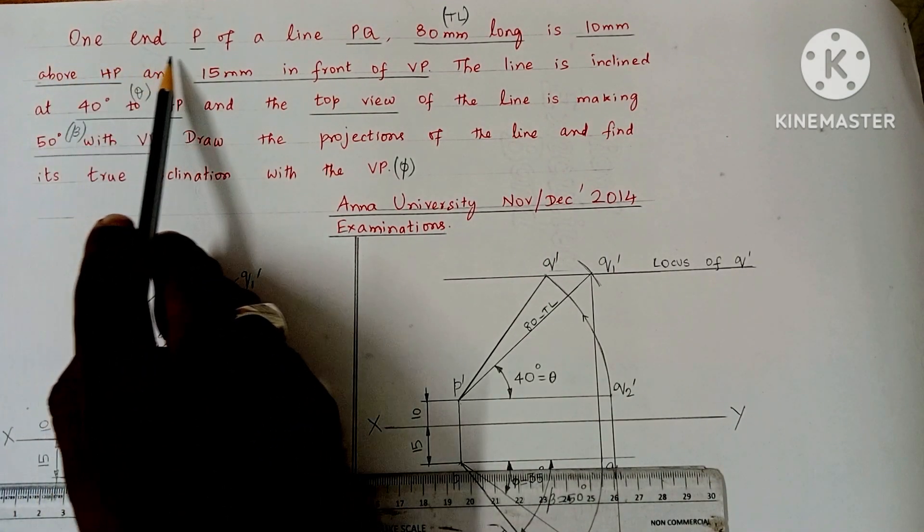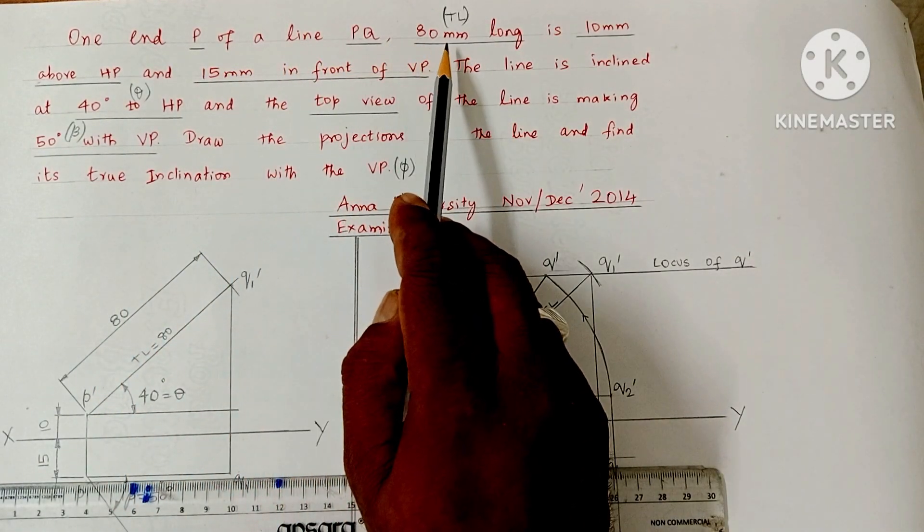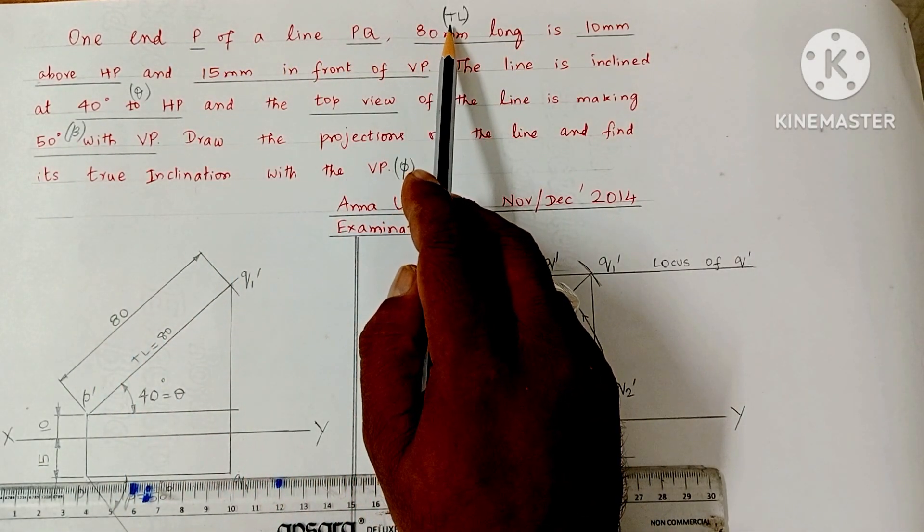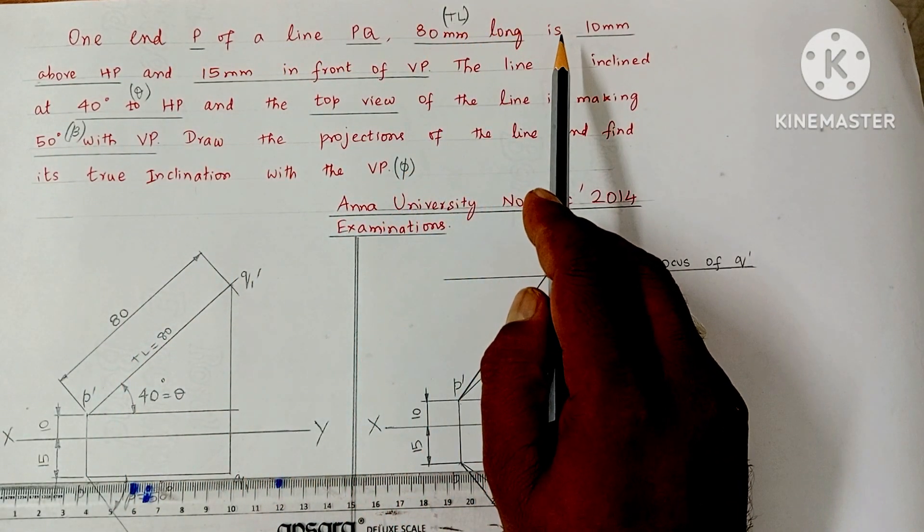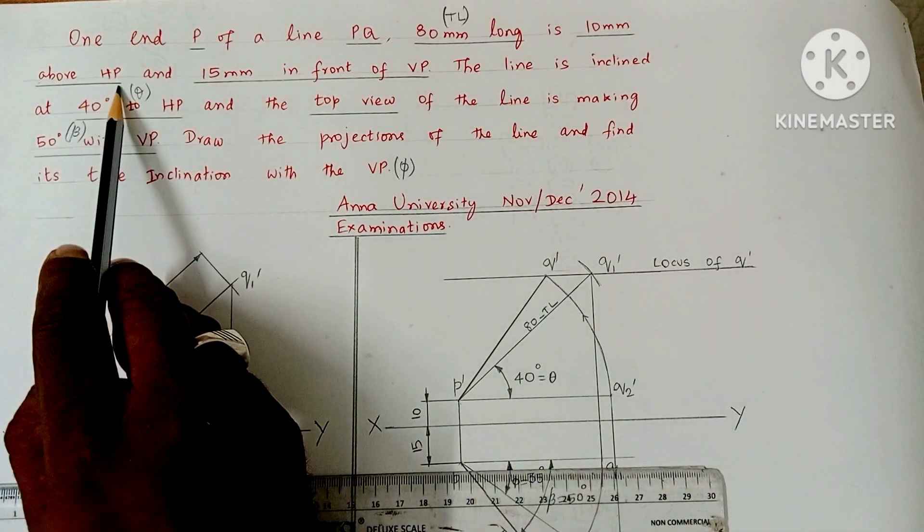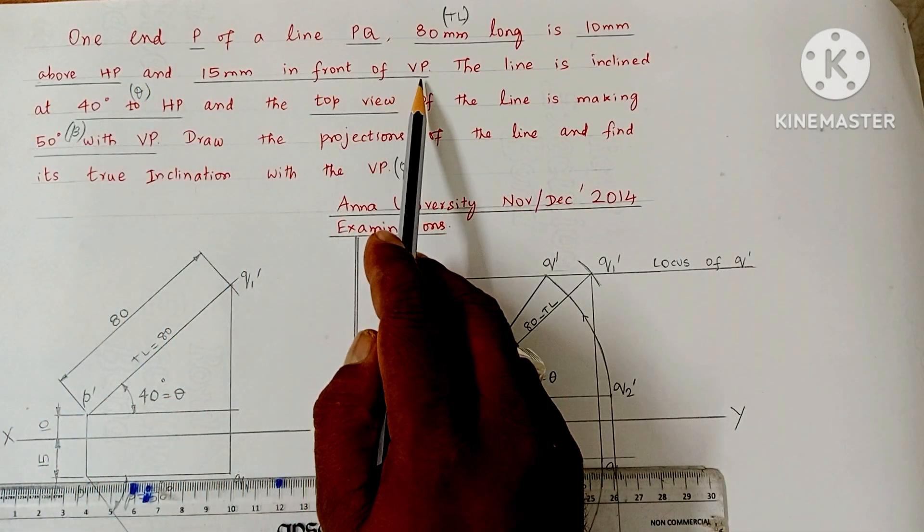Please read the question: One end P of a line PQ, 80 mm long, is 10 mm above the HP and 15 mm in front of VP.